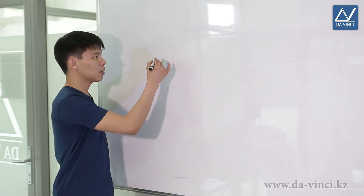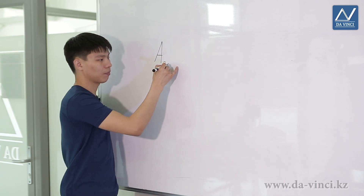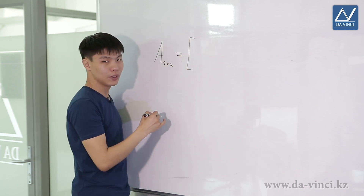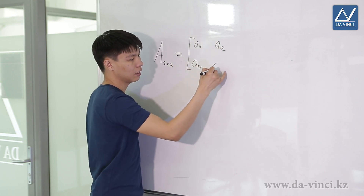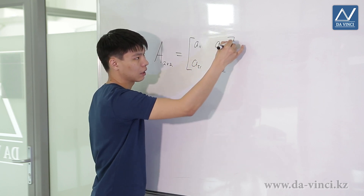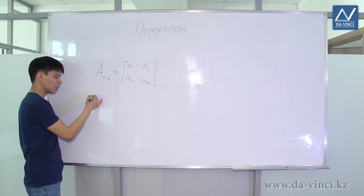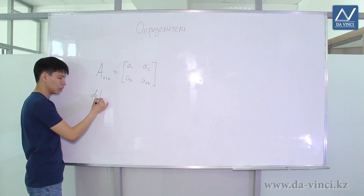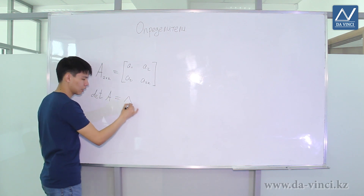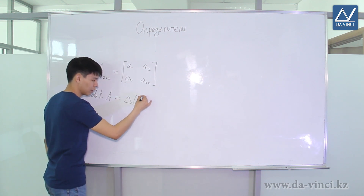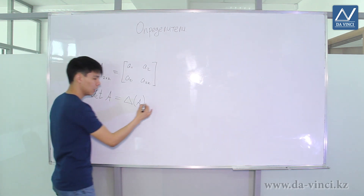Let's start with the second order determinant. Let's consider a square matrix A of size 2 by 2. We know that in general terms its elements can be written as A11, A12, A21, A22. The determinant of a 2 by 2 square matrix is a number which we denote as the determinant of A, or simply delta A, or just delta if it is clear which matrix we are talking about.